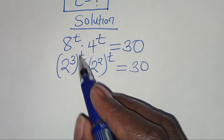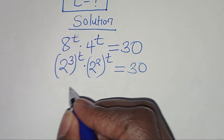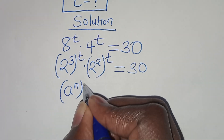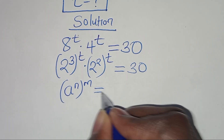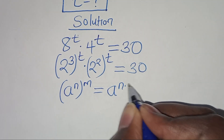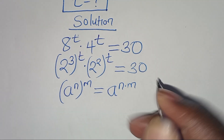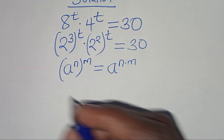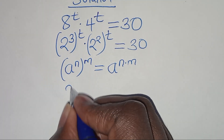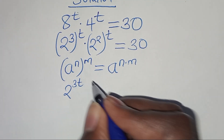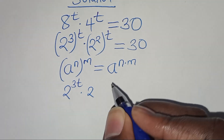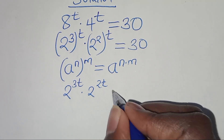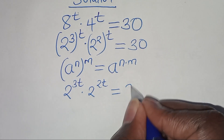Now, 2 to the power of 3 raised to power t is in the form of a to the power n raised to power m, which we can express as a to the power n times m. Applying this exponent property, we have 2 to the power 3t times 2 to the power 2t, equal to 30.